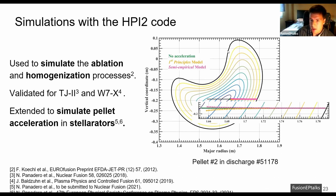Here we can see the TJ2 bean-shaped plasma cross-section, and here we have the simulation of the pellet trajectory, according to the three different cases. When the acceleration is calculated by the semi-empirical model, by the first principal model, and when no acceleration is considered.